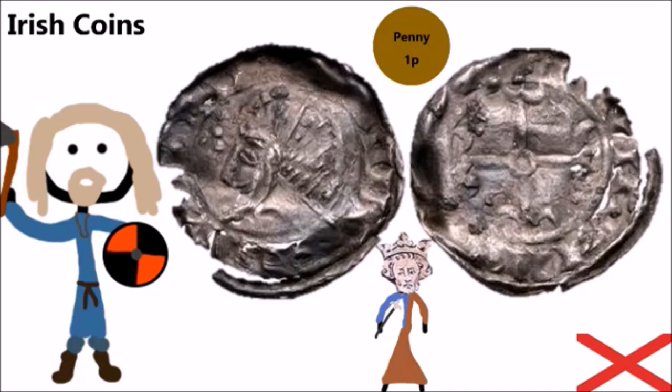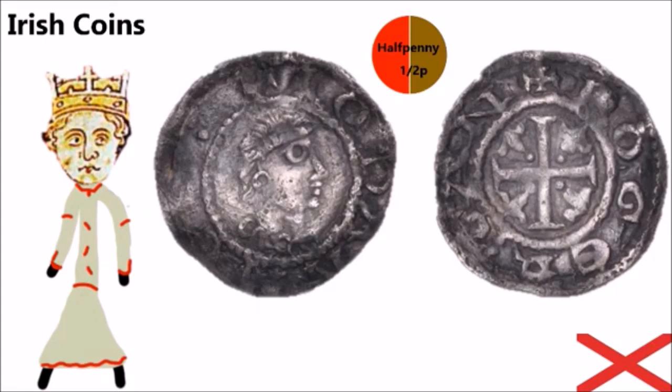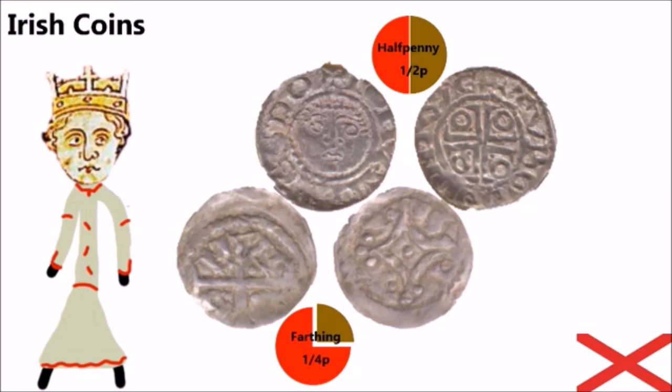Prince John was given the Lordship of Ireland by his father Henry II when he was 12 in 1179 AD. He's displayed on the left hand side of this coin. The right hand side of this coin features a cross and a fleur-de-lis, which symbolises royalty, and it also states that the coin was minted in Dublin. This is another coin minted in 1179 AD, with the top left featuring John, Lord of Ireland, and the right hand side featuring a cross and the name of the moneyer, Torgard of Dublin.